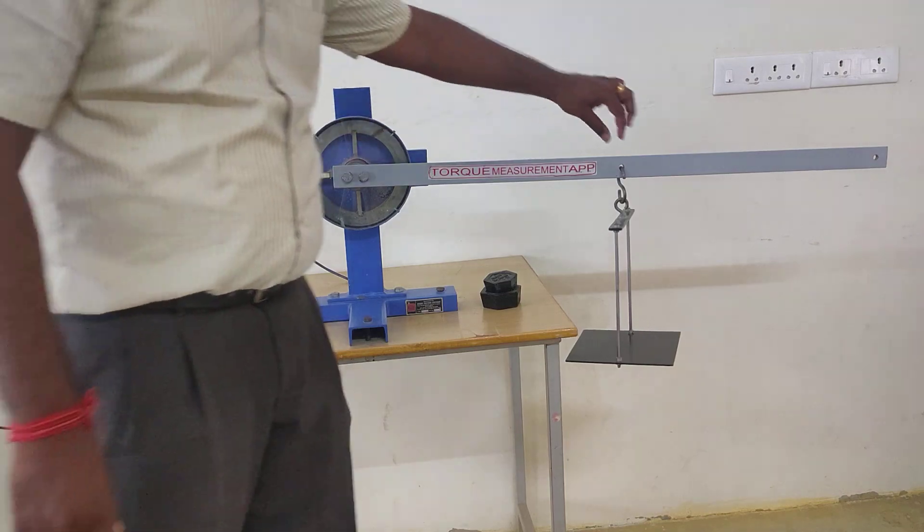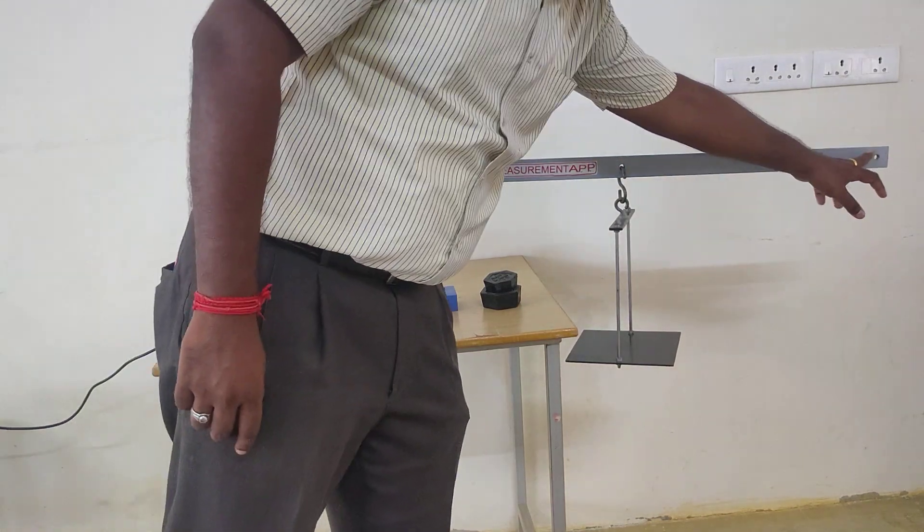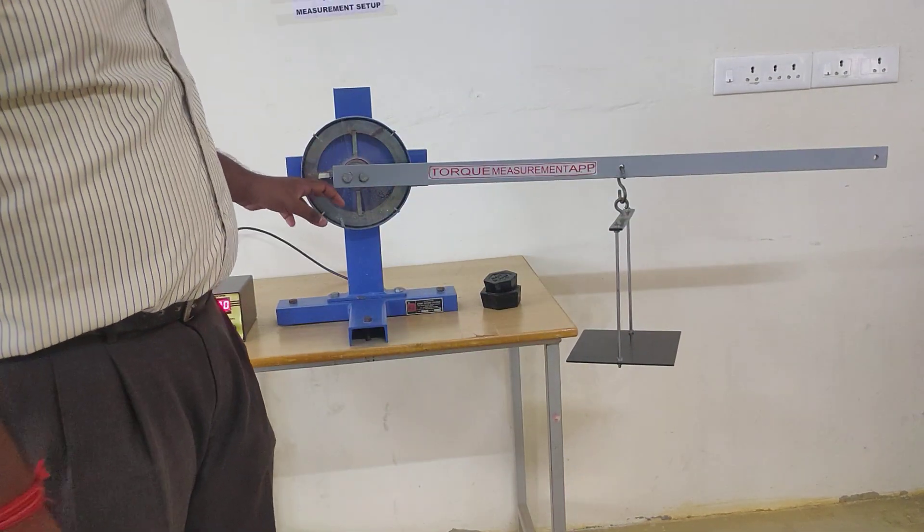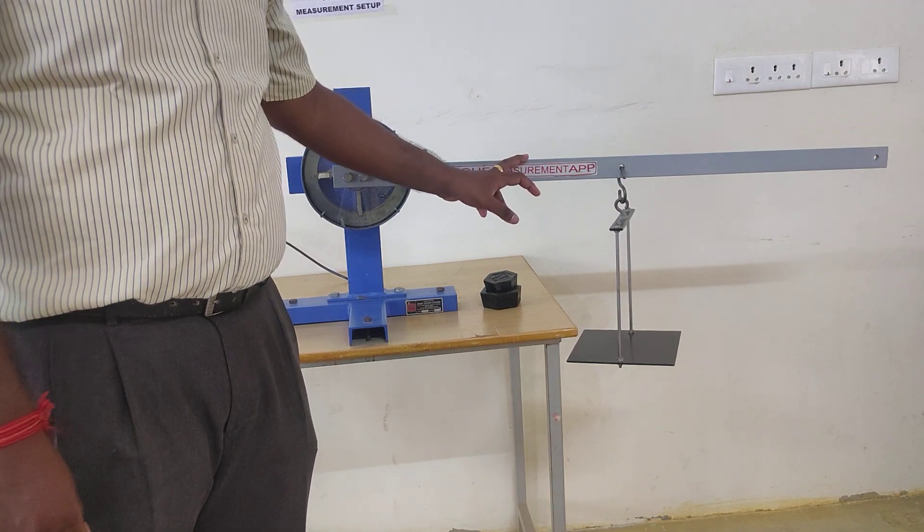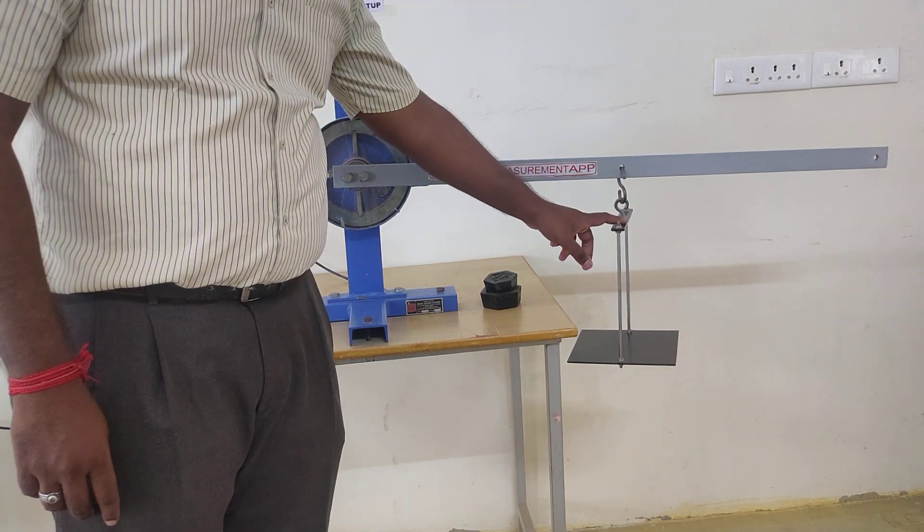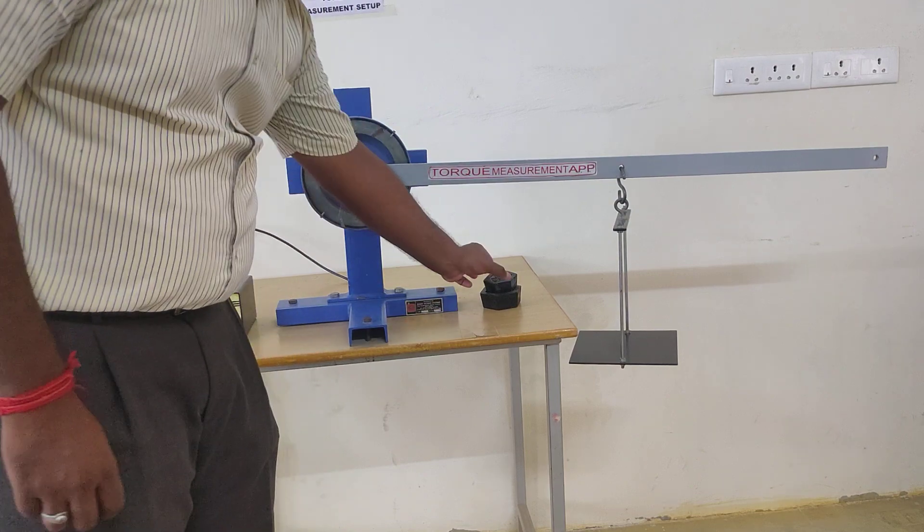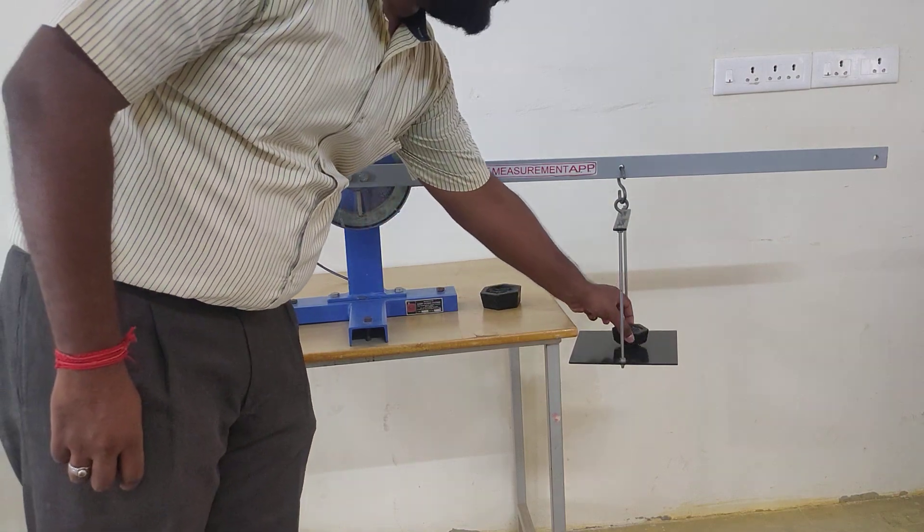We have two positions: 0.5 meter position and 1 meter position. We have to place accordingly where the torque will be needed. I will be placing the hanger over 0.5 meter length and fixing the weight of 0.5 kg.